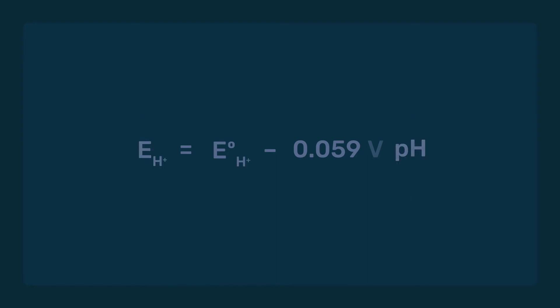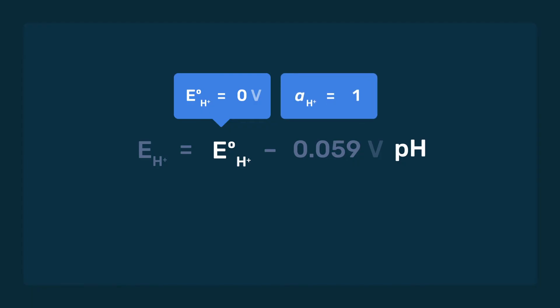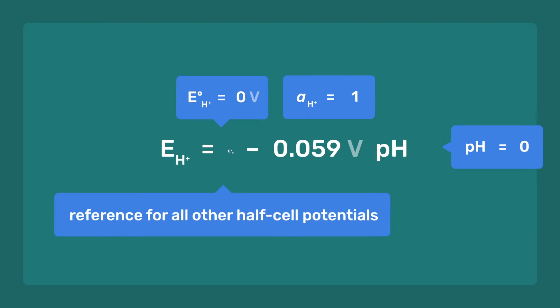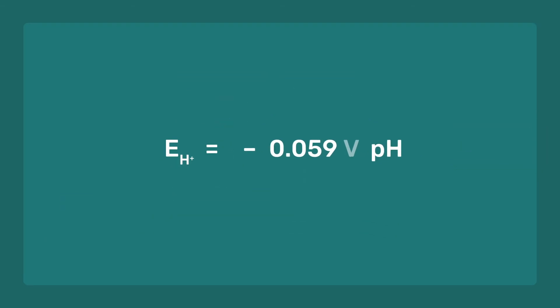By convention, the standard half-cell potential for the reduction of protons is taken as zero, and refers to standard conditions of unit proton activity, meaning that the pH is equal to zero. This potential serves as a reference for all other half-cell potentials. With this, the Nernst equation tells us that the potential for the proton reduction is simply -0.059 V times pH at ambient temperature.